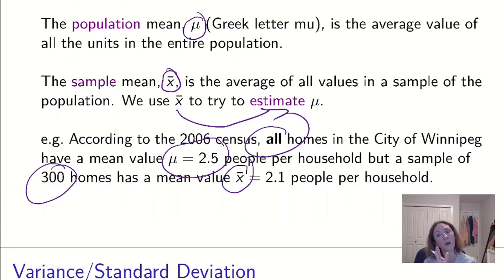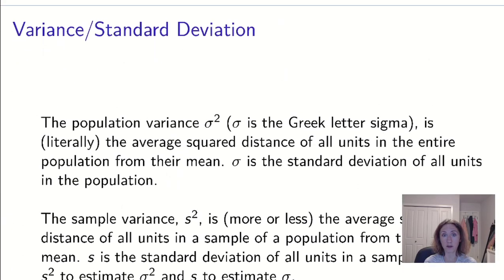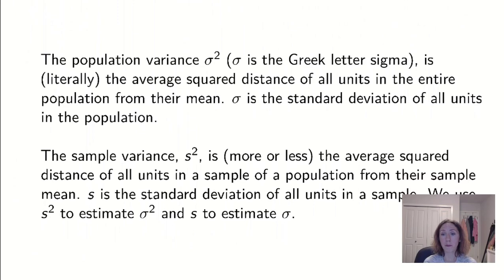So our mean is our measure of center, but we also know when we're describing distributions we also need a measure of spread, so we can also look at our variance or standard deviation. We remember that our sample variance, let's look at this one first, it's more or less the average, in quotes, squared distance of all units in a sample of a population from their sample mean. Remember we say average because we aren't literally taking the average squared value of the points from their mean—we are dividing by n minus 1 instead of n. We're making a slight correction to it.